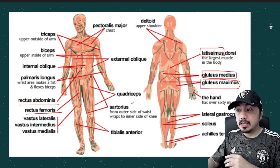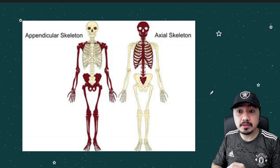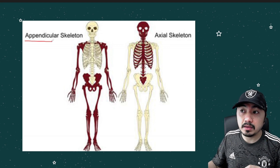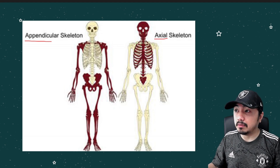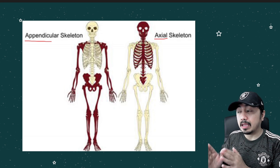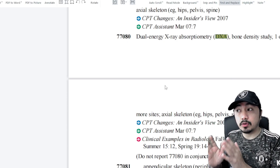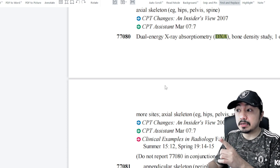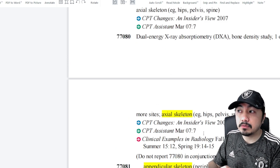Now let's go to the skeletal system. It is the system that serves as the framework of our body. It is divided into two subdivisions: the appendicular skeleton and the axial skeleton. The axial skeleton covers the brain and the internal organs of the thoracic region — the skull, the ribs, and the spinal section. Note that some CPT procedures state that the hip and pelvis are part of the axial skeleton. In the CPT radiology section, you have your DEXA scan or bone density study, code 77080.